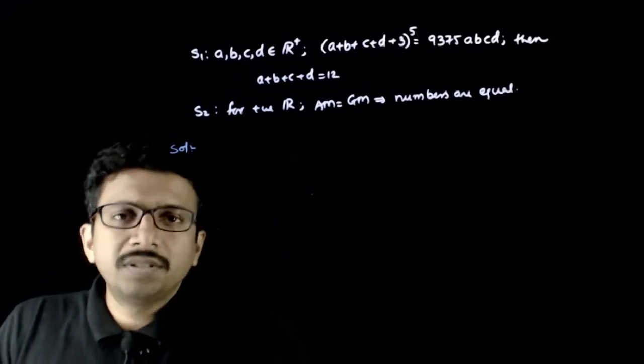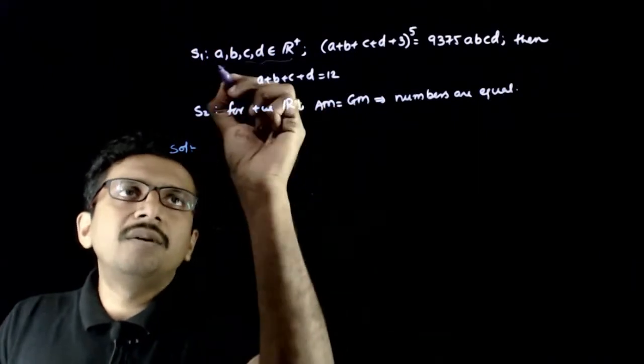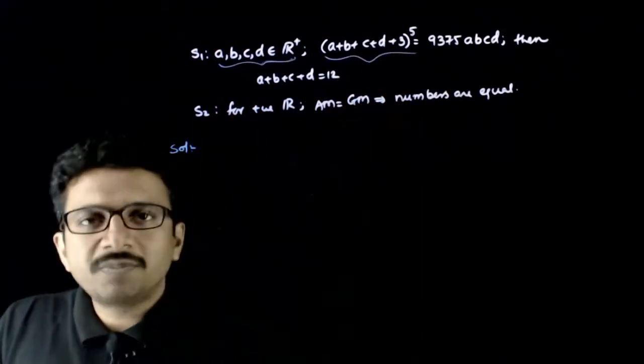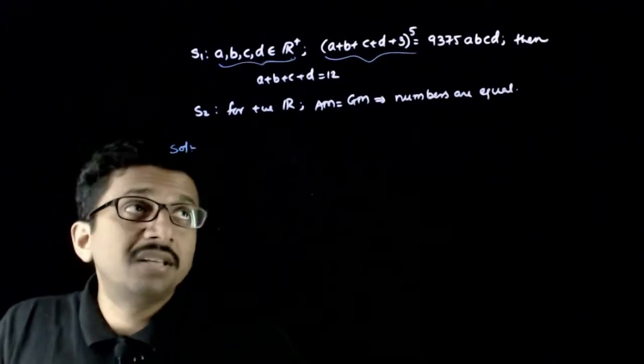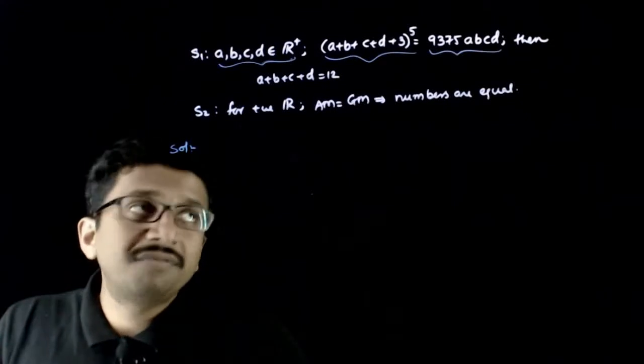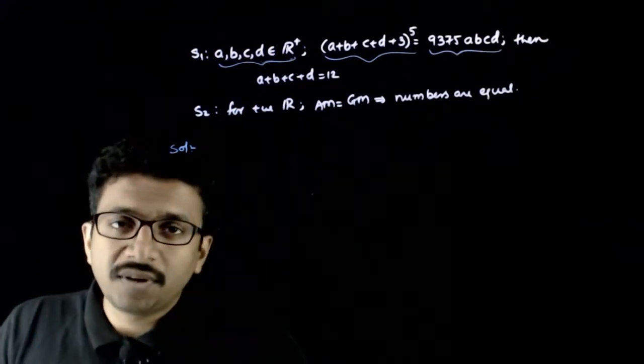Welcome students. In this question you have given that if a, b, c, d are 4 real numbers and if a plus b plus c plus d plus 3 power 5 is exactly equal to 9375 abcd, then a plus b plus c plus d is equal to 12.